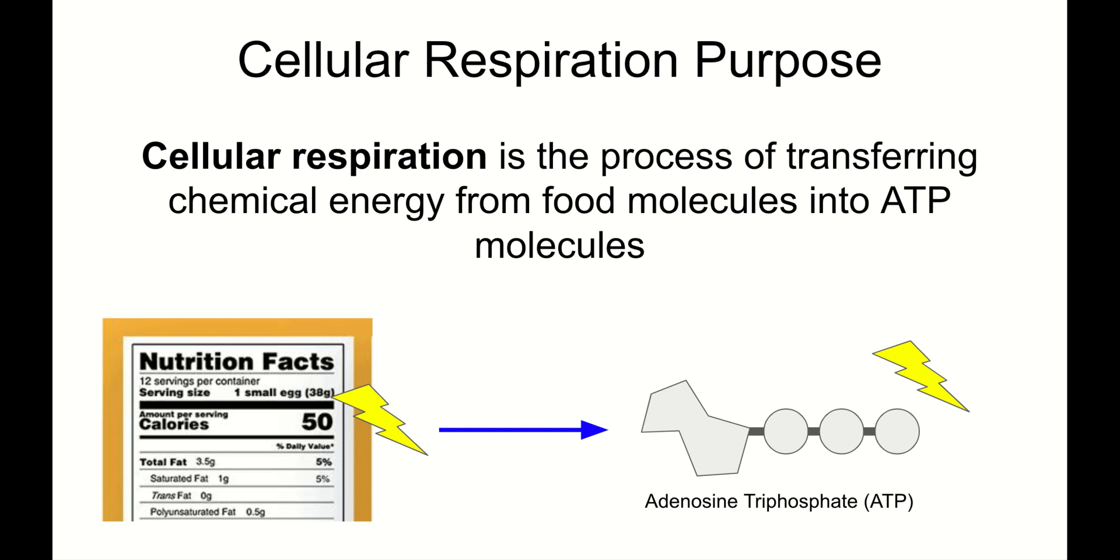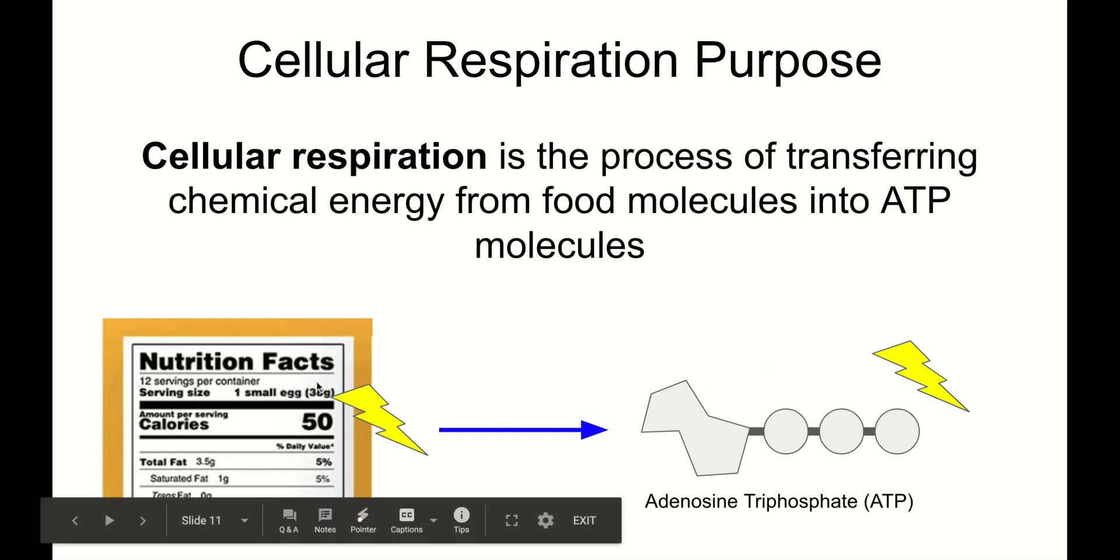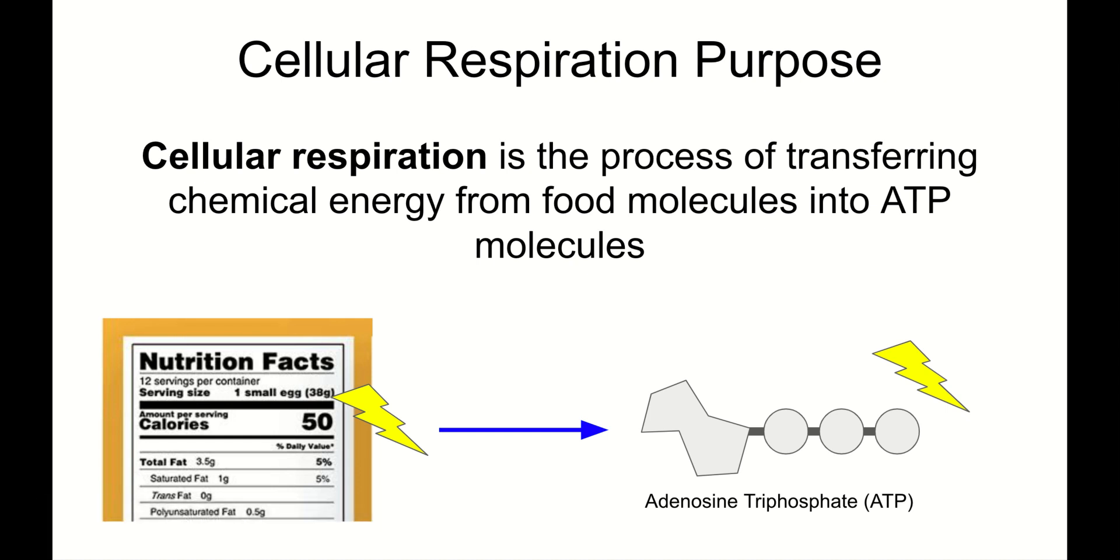So, one more time before we talk about the process, the purpose of cellular respiration is the process of transferring chemical energy from food molecules into chemical energy in ATP molecules. That's the whole purpose. We've got to transfer energy from our food into our ATP. How do we do that? It's time to talk about the process.